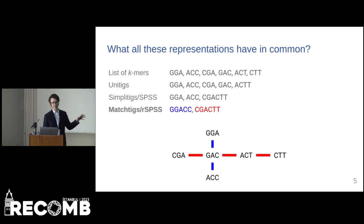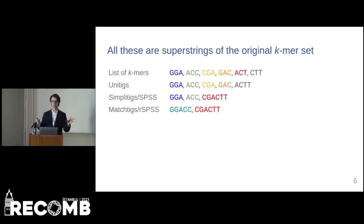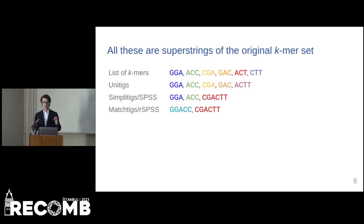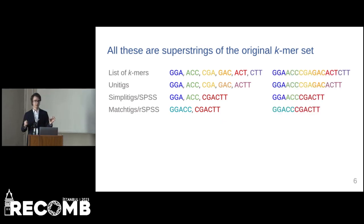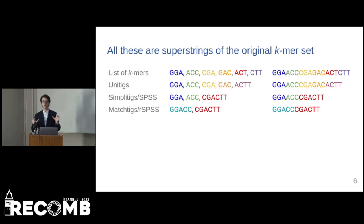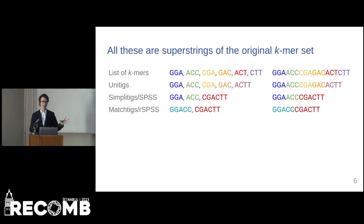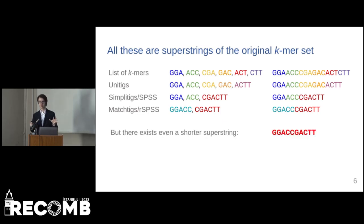Looking at the de Bruijn graph, it might seem that we can't do better. But we can reframe ourselves — we don't need the de Bruijn graph. We can realize that what all these methods compute is just a set of strings that contain all the k-mers as their substrings. Alternatively, they compute a single string that contains all k-mers as substrings — a superstring of the input k-mers. What we are really trying to bring down is the length of this superstring. But there are other superstrings, and some of them have shorter length.